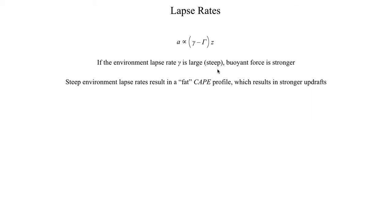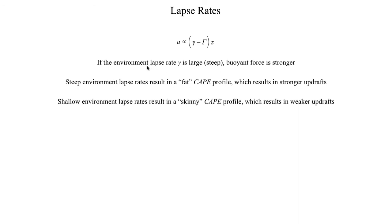When trying to diagnose updraft speed, using the environmental lapse rate is a much better approach than using CAPE alone. CAPE just tells you how much buoyancy is present in the atmosphere — whether there's a lot or not so much — but that doesn't really tell you what kind of updraft speeds to expect. Using the environmental lapse rate is a much better way of predicting how strong the updrafts in your storms are going to be. Shallow lapse rates — lower values of lowercase gamma — are much more likely to give you a skinny CAPE profile and probably weaker updrafts.